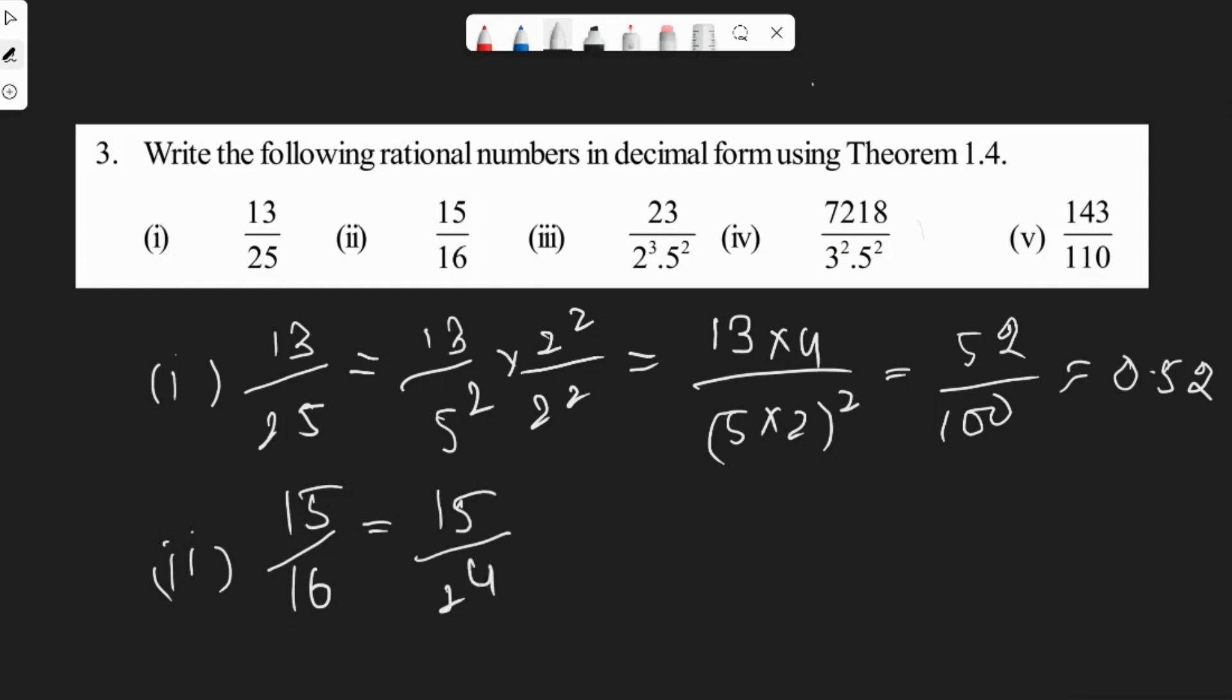Next, second one: 15 by 16. The prime factorization of 16 is 2 power 4. To simplify this, we need to multiply with 5 power 4 on numerator and denominator. 5 power 4 by 5 power 4 will give us 15 into 5 power 4, which is 625, by 2 into 5 whole power 4.